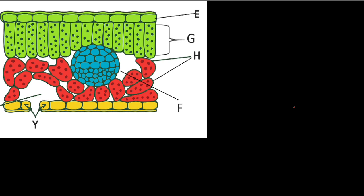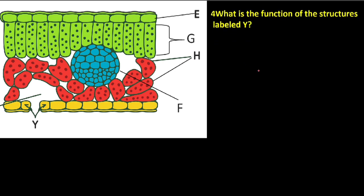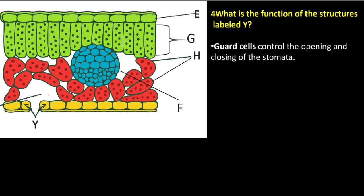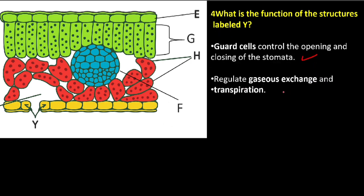Question number four: what is the function of the structures labeled Y — the guard cells? Guard cells control the opening and closing of the stomata. Another function is to regulate gaseous exchange and transpiration by opening and closing the stomata.